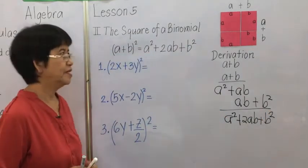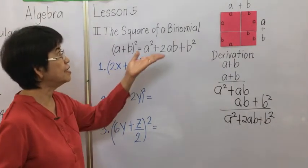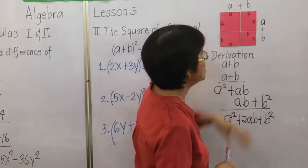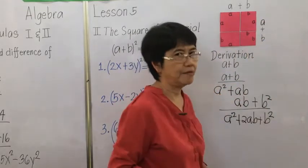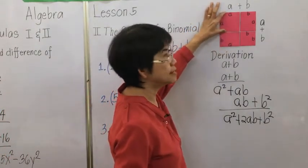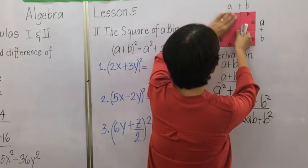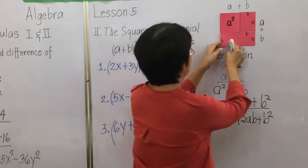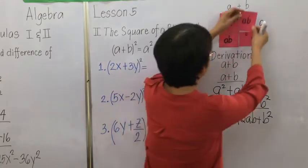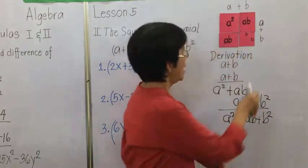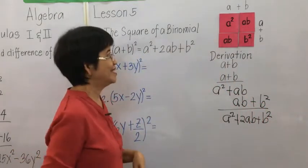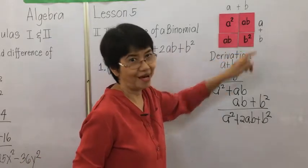We can also demonstrate this geometrically by forming a square with dimensions a plus b by a plus b. Looking at the dimensions, the top-left square formed is a by a, or a squared. The two rectangles are b times a, or ab, and a times b, or another ab. And lastly we have b times b, or b squared. So in this illustration we have a squared plus 2ab plus b squared.